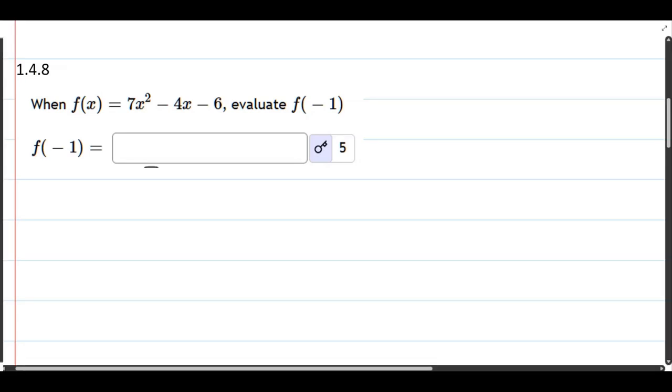And it may be easier to write with this box in place of x. So if you take a box and you f it, you apply the f function. We have 7 times the box squared minus 4 times the box minus 6.